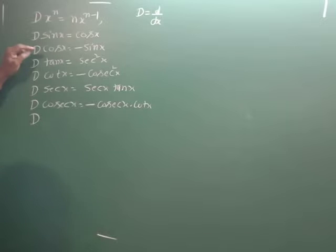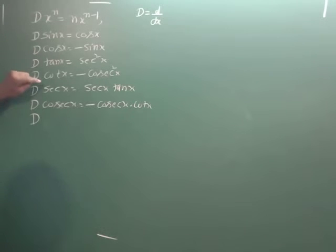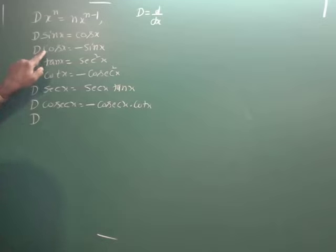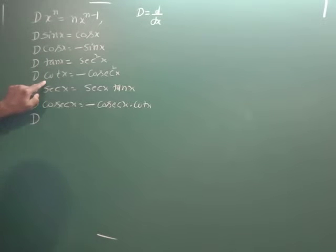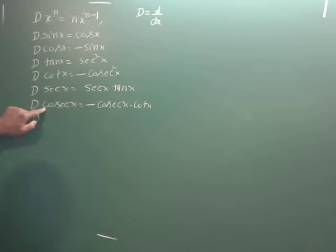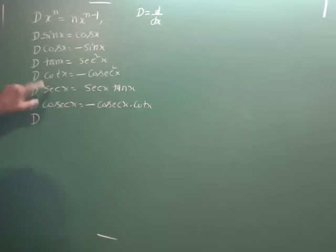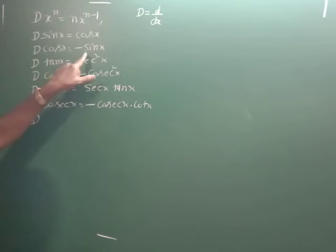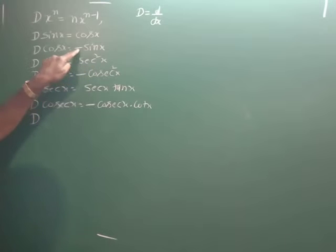Trigonometric functions are easy. You have to look at the starting letter. Cos starts with C, cot starts with C, cosecant starts with C. If the function's starting letter is C, then the differentiation carries a minus sign.